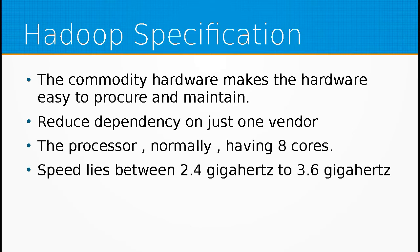Most of the data nodes would have two hexa-core processors or two octa-core processors, meaning eight cores — two CPUs each with eight cores, and a processing speed anywhere around 2.4 to 3.5 GHz.